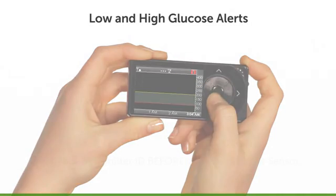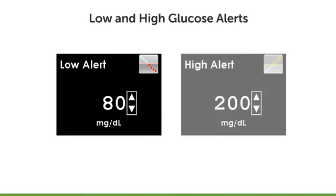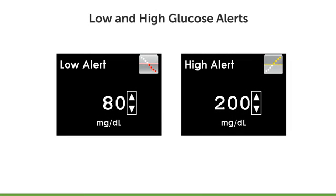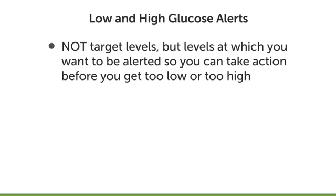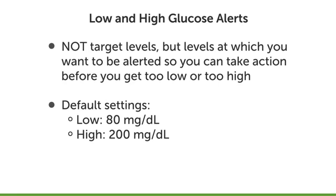For the final step in your initial setup, we will set your low and high glucose alert levels. These levels allow your receiver to alert you when your sensor readings trend above or below your individualized alert levels. These alerts are not meant to be your target levels, but the levels at which you want to be alerted so that you can take action before you get too low or too high. The alerts are defaulted to be turned on and set at 80 milligrams per deciliter for low and 200 milligrams per deciliter for high. These can be individualized based on your needs, personal experience, or suggestions from your health care provider.